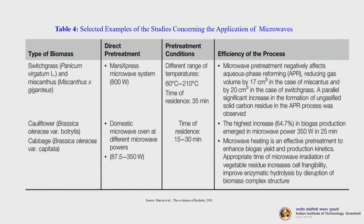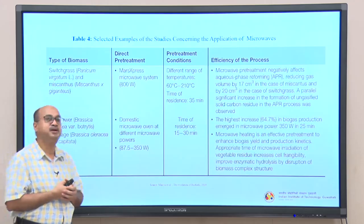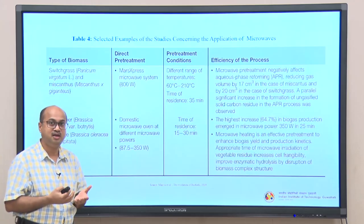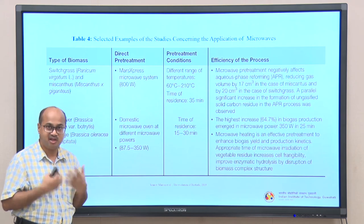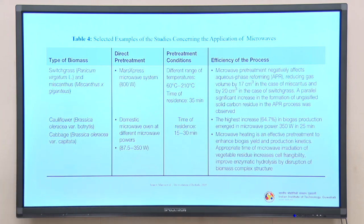A table lists studies on microwave applications including switchgrass, miscanthus, cauliflower and cabbage, with direct pretreatment using domestic microwave ovens at various power levels. Residence time is 15 to 30 minutes, with the highest increase in biogas production observed at 350 watts microwave power at 25 minutes. A very interesting fact about microwave treatment is that it is a much faster process — time is money in industry, so we should choose faster processes.